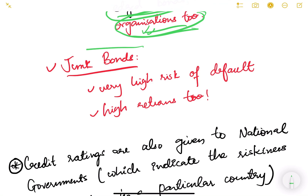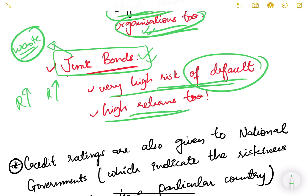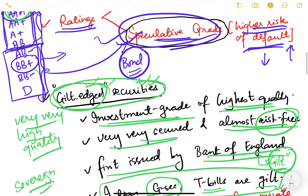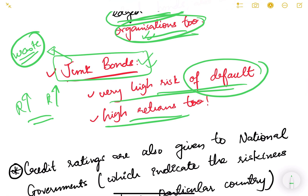There is another terminology: junk bonds. Junk bonds carry a very high risk of default. Junk essentially means waste — very high returns but very high risk. Higher the risk, higher the returns. These may be rated B minus or D on the scale. They may promise 25% or 50% return per annum — very high return but very high risk. Such bonds are known as junk bonds.